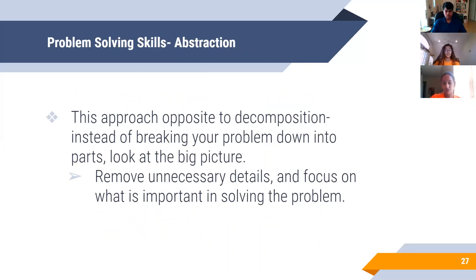Another problem-solving skill is called abstraction. This approach is kind of contrary to decomposition, but if done right it works just as well. Instead of breaking your problem down, you look at the big picture — eliminate all the details that aren't relevant to what you need to solve, and focus on what's important. Just look at the big picture as a whole: what are the main tasks that need to be done to accomplish or overcome my challenge?